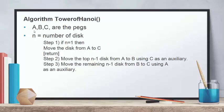In the algorithm we declare the 3 pegs as variables a, b, and c, and n is the number of discs. Step 1: if n is equal to 1, then we directly move the disc from a to c and return. Step 2: move the top n minus 1 discs from a to b using c as an auxiliary. Step 3: move the remaining n minus 1 discs from b to c using a as an auxiliary.